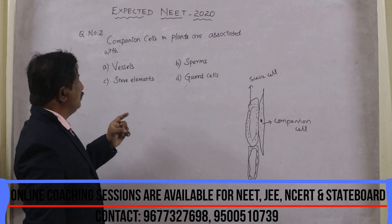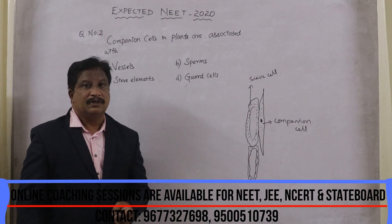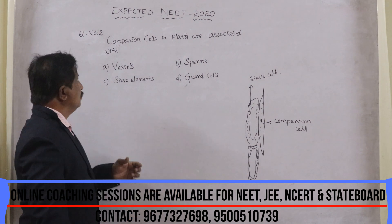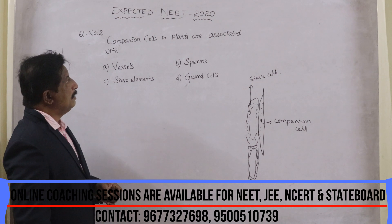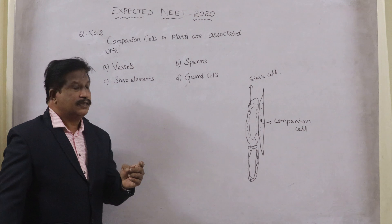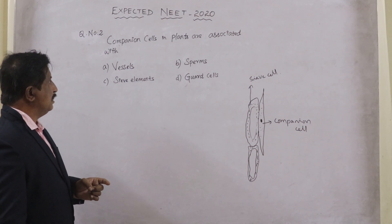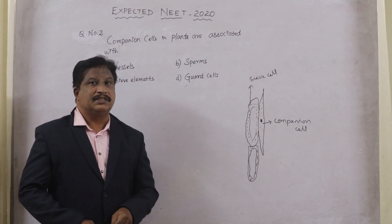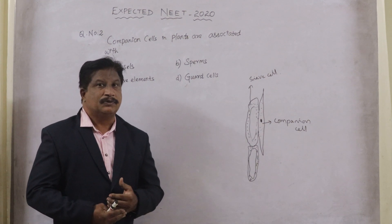We can expect such questions not only in the NEET exam but also in many other competitive exams. The next question: companion cells in plants are associated with — vessels, sperms, sieve elements, or guard cells?